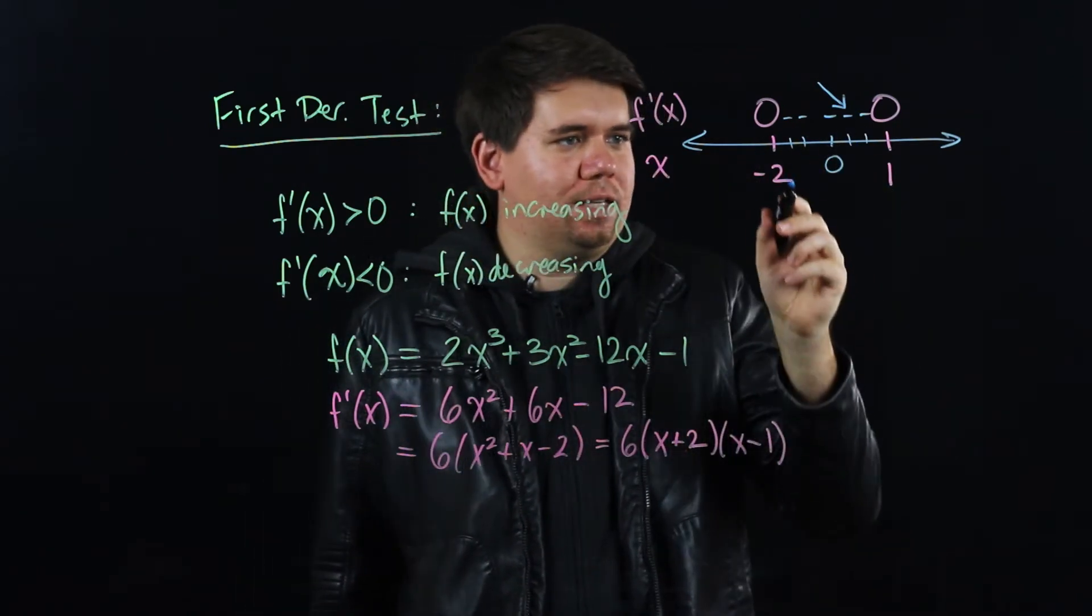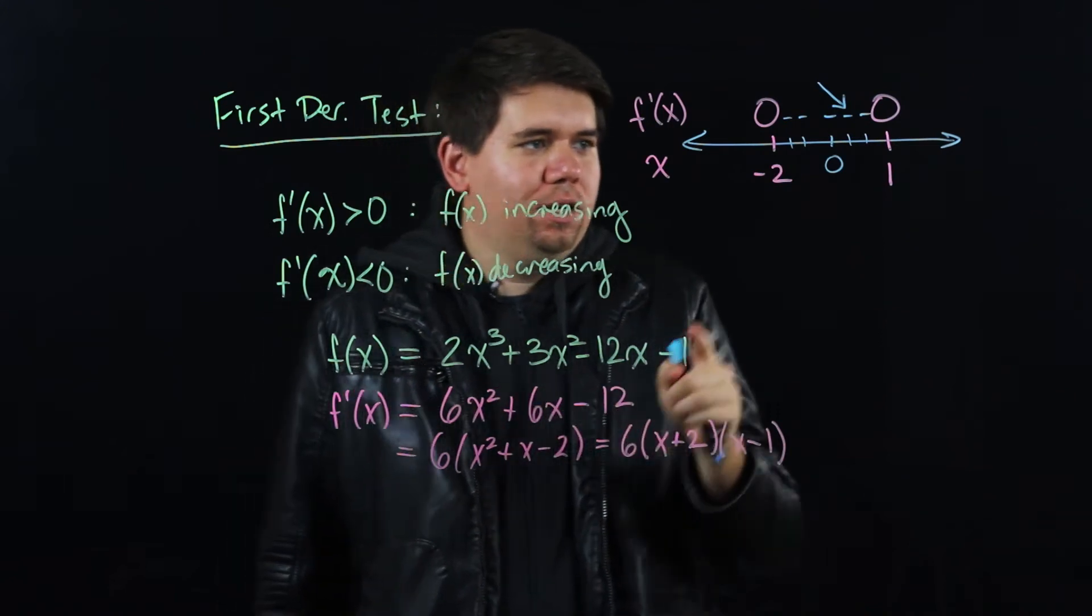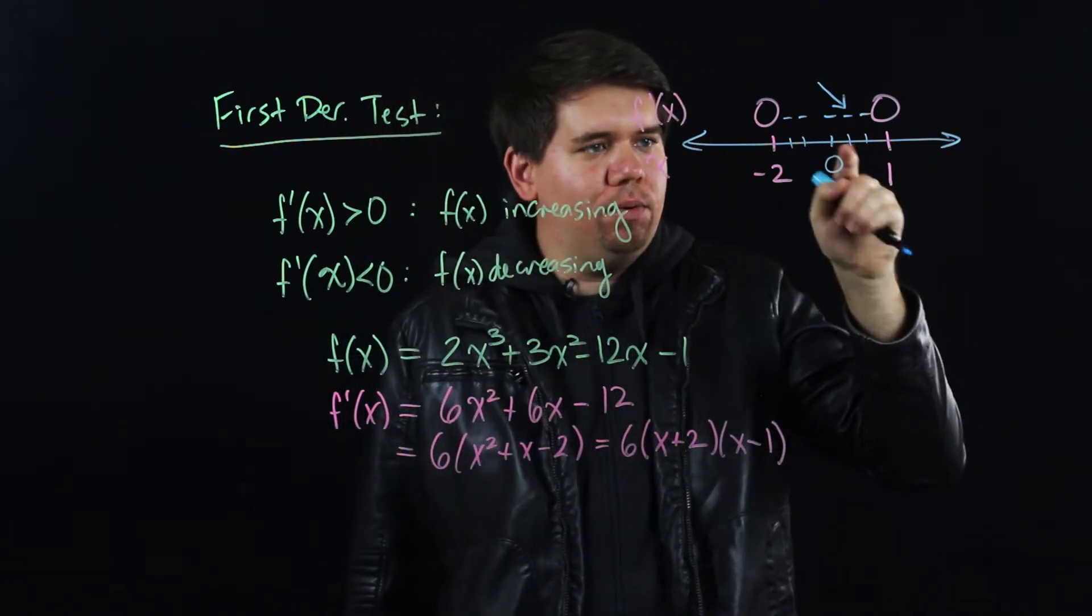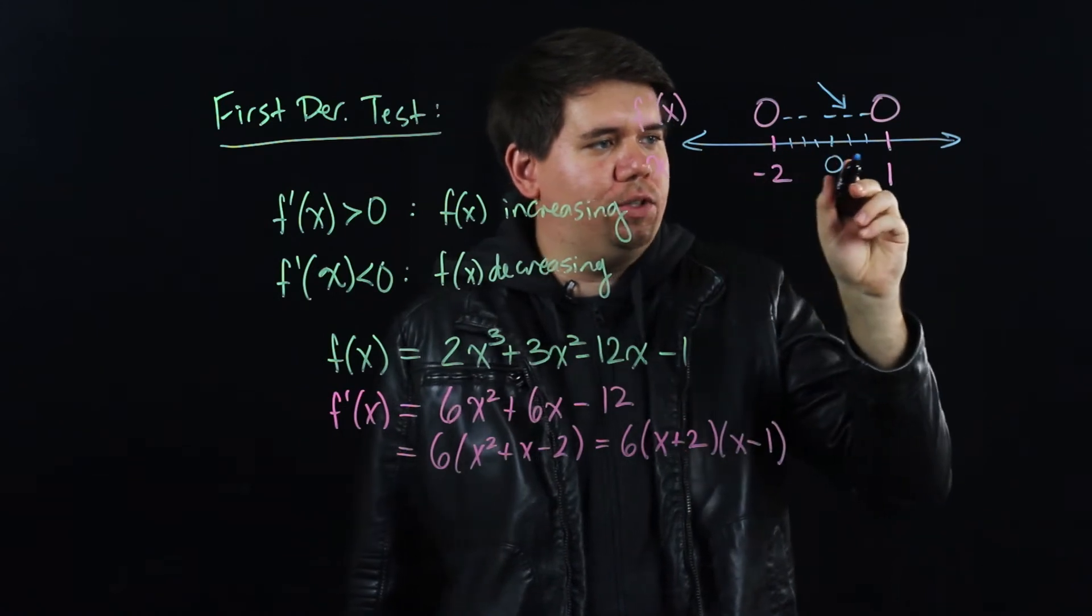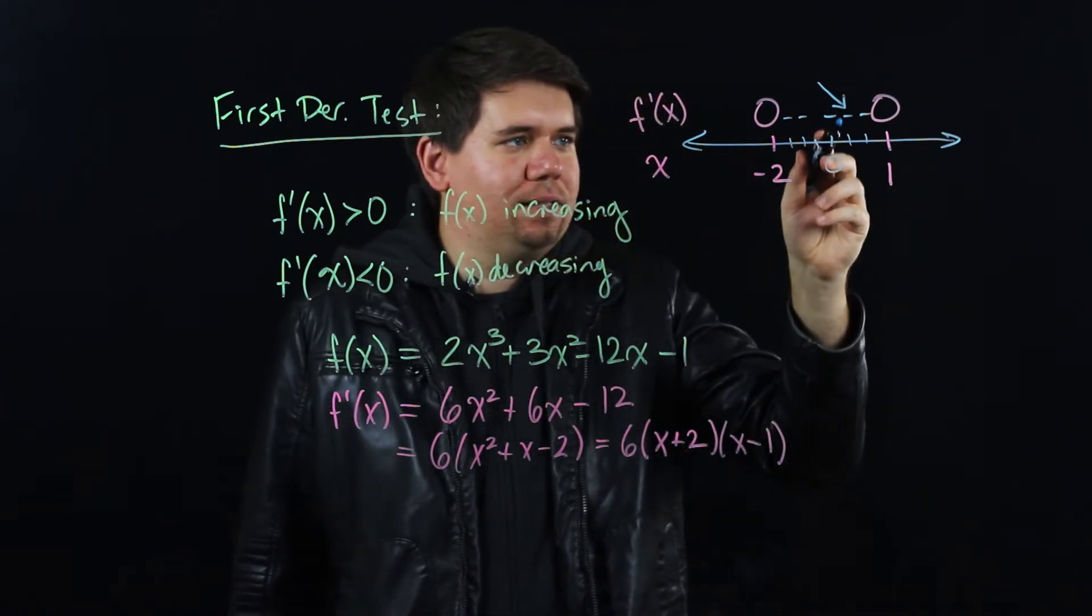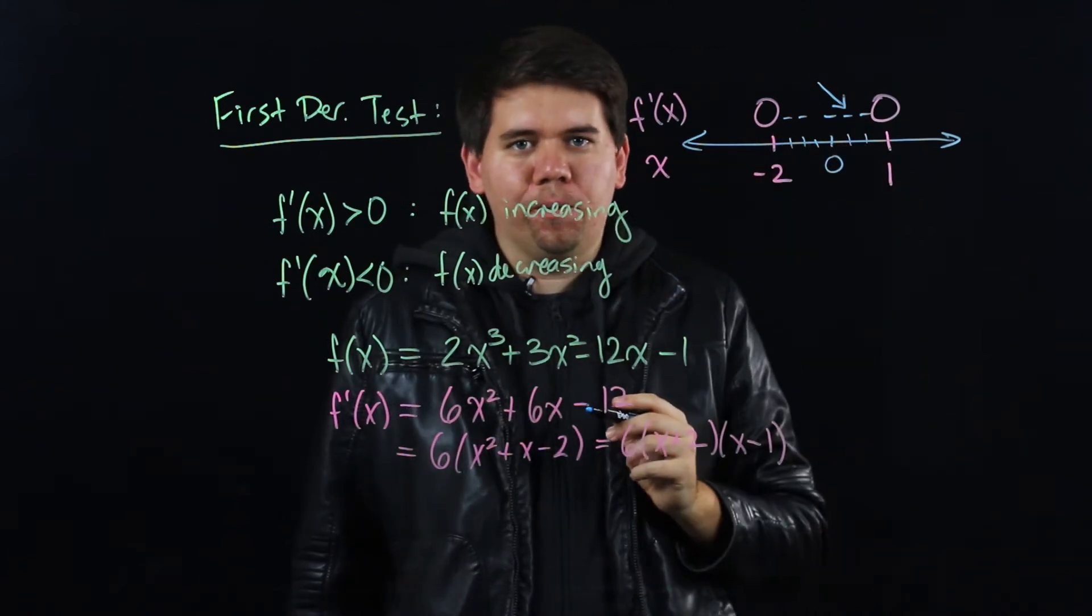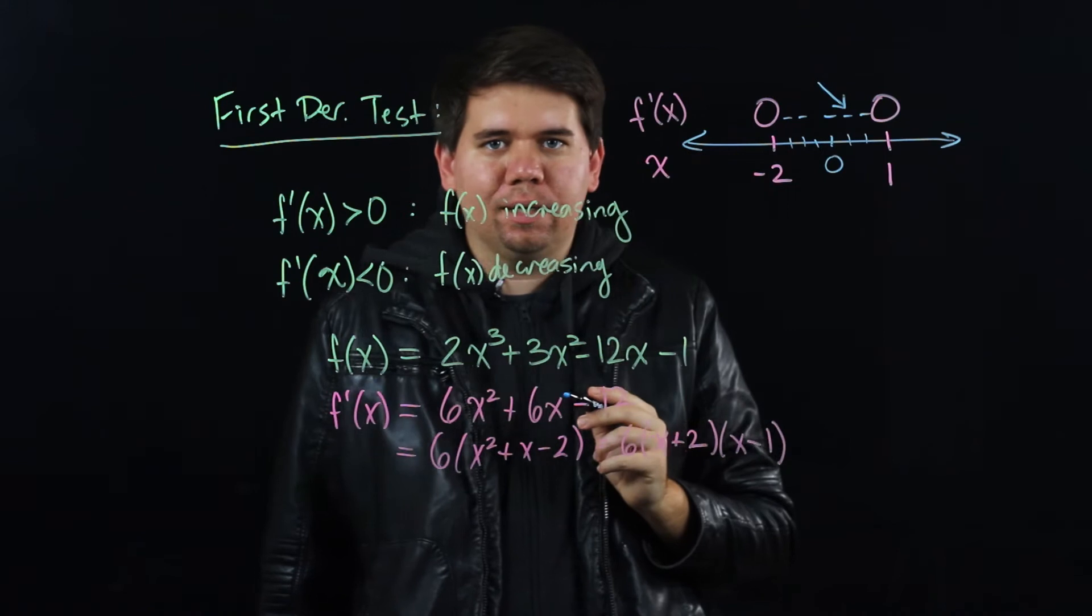You can test any of them. You can test -1, and if you plug -1 into this, you will get a negative number. You can test 0.5 or anything you want to test. Any of these numbers between -2 and 1 has to be the same. Since it was negative, it will continue negative until it hits 0. So I only need to really test one number in between.